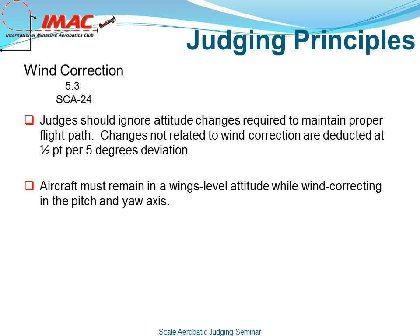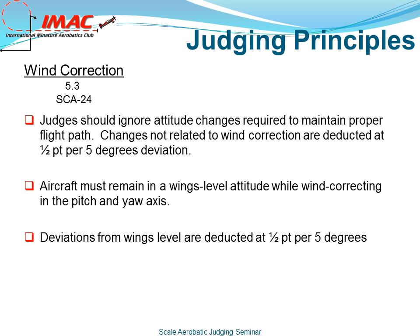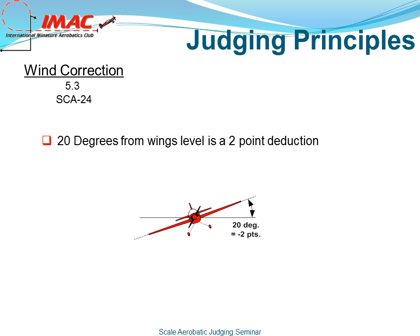Aircraft must remain in a wings-level attitude while wind correcting in pitch and yaw axis. Deviations from wings level are deducted at half a point per 5 degrees. 20 degrees from wings level is a 2-point deduction.